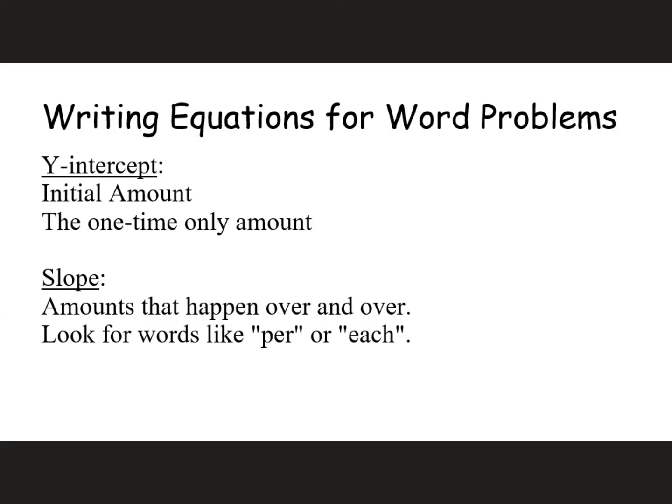When you are writing equations for word problems, here are some key things to think about. Your y-intercept in the word problem is your initial amount or the one-time amount — maybe a one-time fee. Your slope is the thing that happens over and over again. Look for words like 'per' or 'each.'